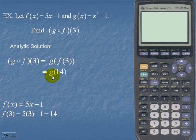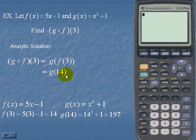Remember that we were given g of x, which is x squared plus 1. So g of 14 is 197. Therefore, g circle f of 3 is 197.